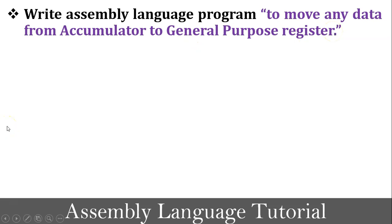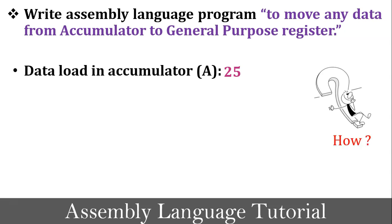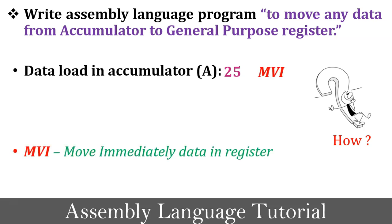As per the definition, my first task is to load data into accumulator A. For example, I would like to store 25 in the accumulator. The question is: how can I load 25 into the accumulator? In 8085 microprocessor programming, I can load data into the accumulator using the MVI instruction. The meaning of MVI instruction is 'move immediately data in register.' Using the MVI instruction, you can load data into the accumulator or any general purpose register.